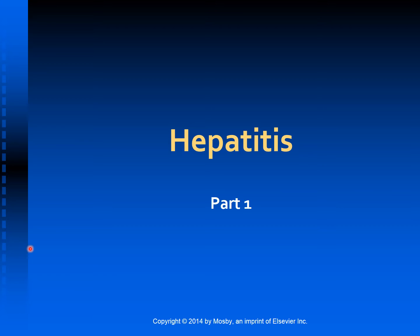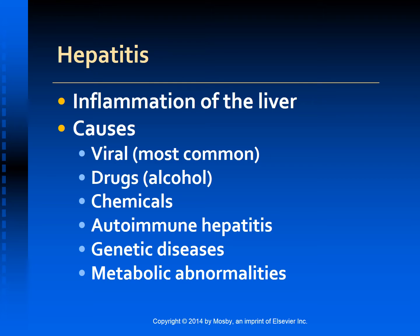Today's topic is hepatitis. Hepatitis is a broad term that means inflammation of the liver. It is most commonly caused by viruses, but can also be caused by alcohol, drugs like acetaminophen, azathioprine, and methotrexate. It can be caused by chemicals including systemic poisons like carbon tetrachloride and gold compounds. Autoimmune hepatitis, genetic disorders like Wilson's disease — characterized by accumulation of copper — and metabolic abnormalities like hemochromatosis can also cause hepatitis.